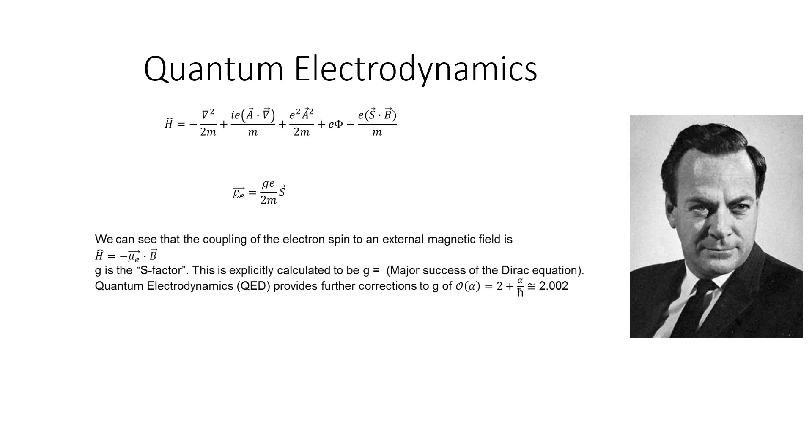I'll define the moment mu sub e vector as g e over 2 m s. We can see that the coupling of electron spin to an external magnetic field is, the Hamiltonian is minus mu e dot b, where g is the g-factor. However, this is explicitly calculated to be g equals to, this should be 2, which is, this should be a 2 here, which is a major success of the Dirac equation.